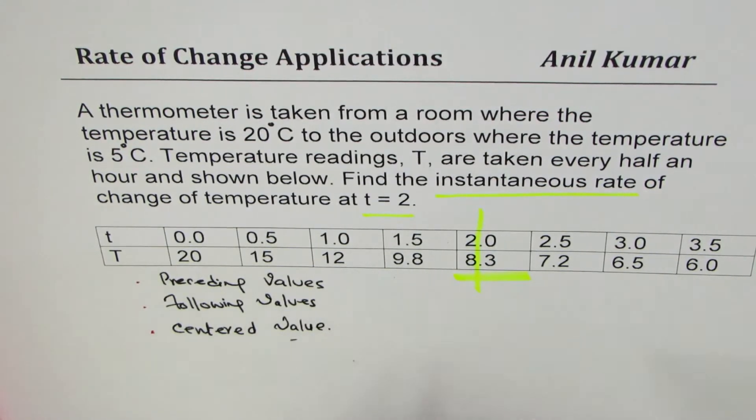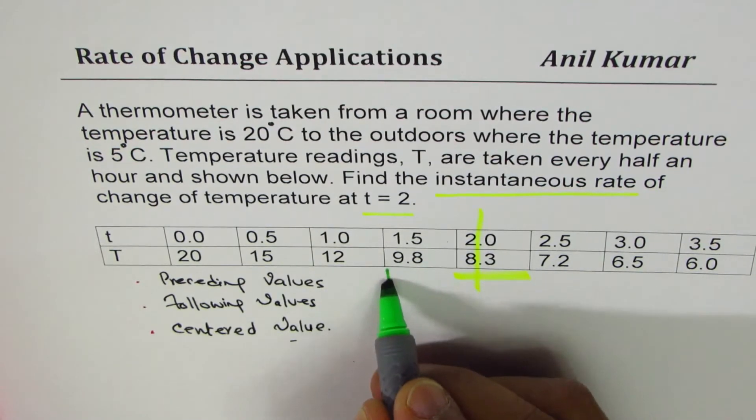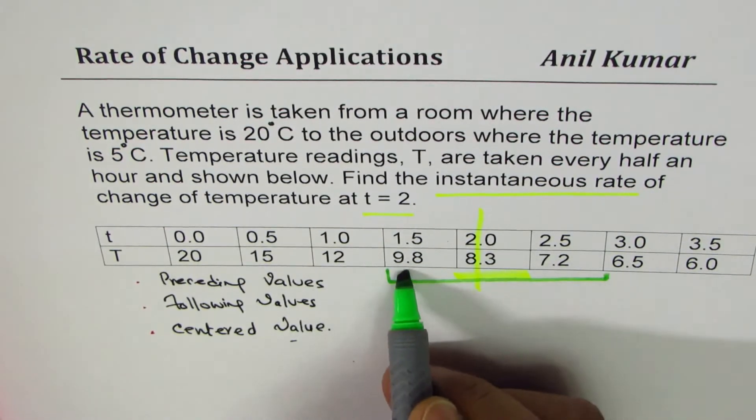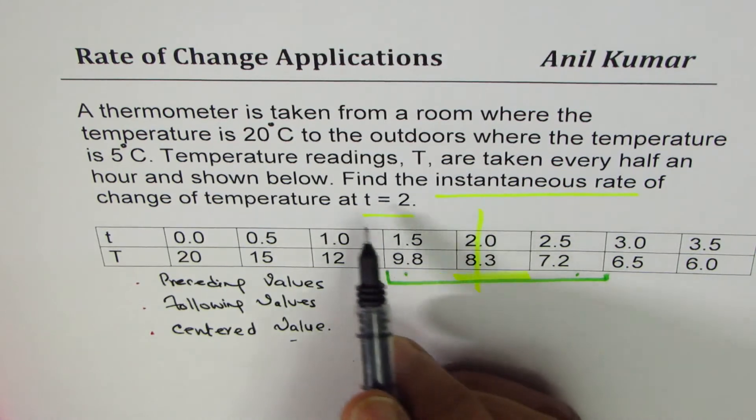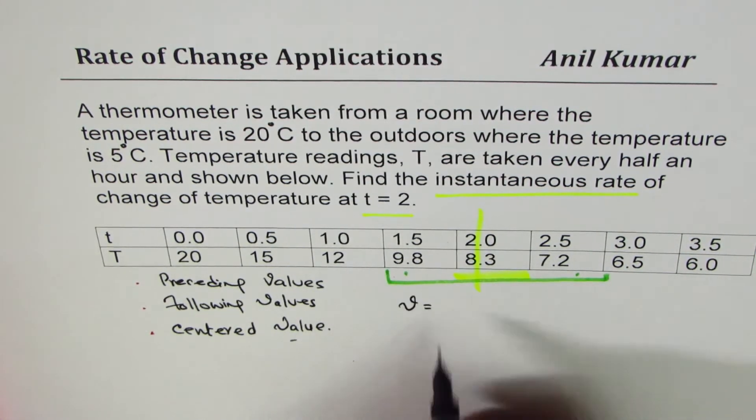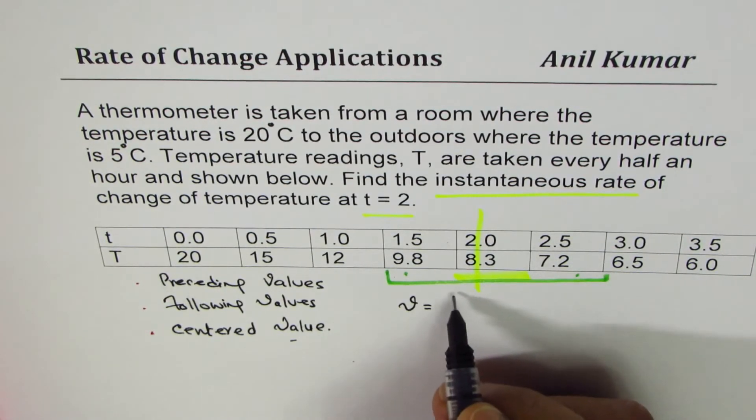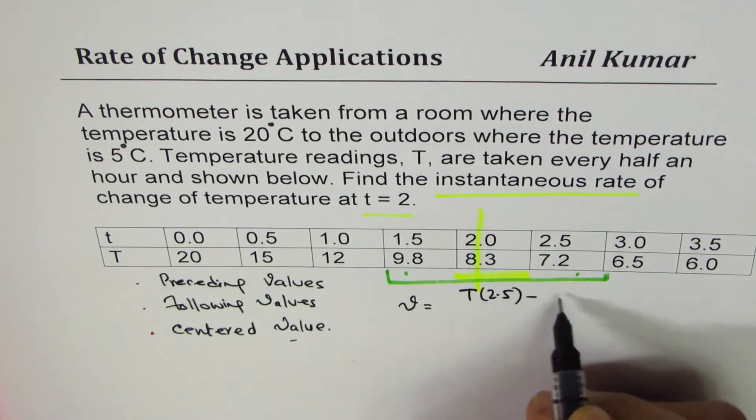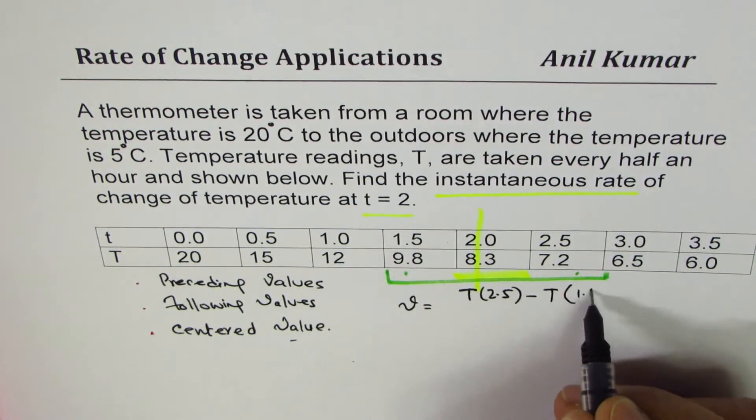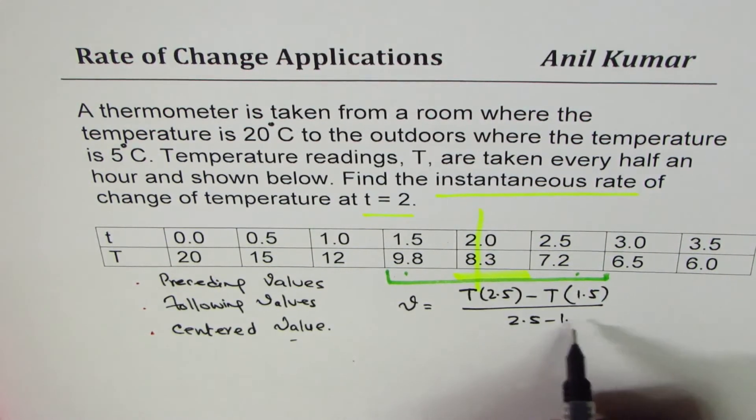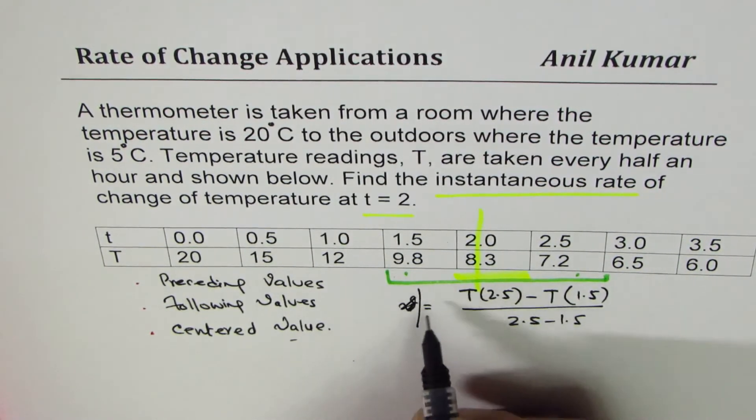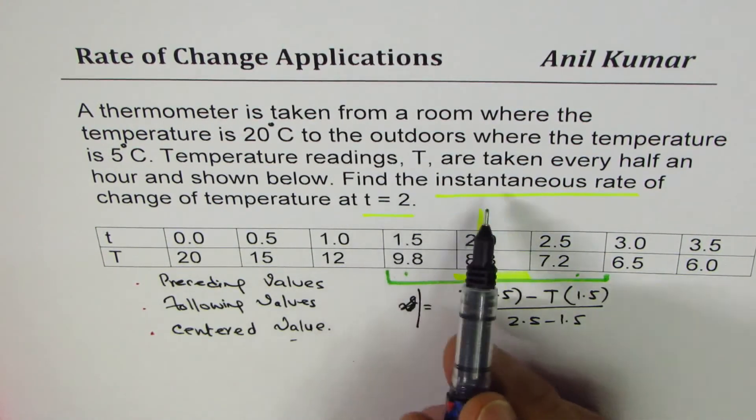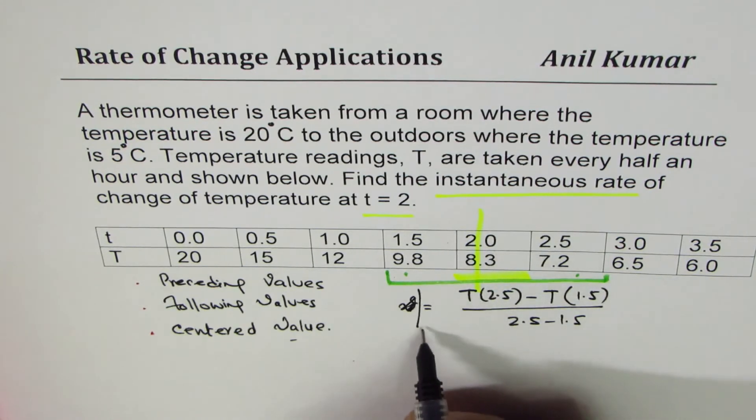What we will do here is use the center value - that means we'll find average rate of change using these two where 2 is in the center. That also gives us fairly good value for the instantaneous rate of change at a point, which is when t equals 2. We can write rate of change at 2 is temperature at 2.5 minus temperature at 1.5, divided by 2.5 minus 1.5.